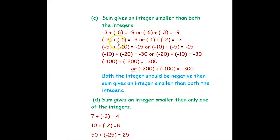Similarly, negative 2 plus negative 1 equals negative 3; negative 5 plus negative 10 equals negative 15; negative 10 plus negative 20 equals negative 30; and negative 100 plus negative 200 equals negative 300. In all these examples the answer is less than both integers. So we can say both integers should be negative for the sum to be smaller than both integers.